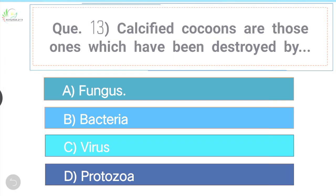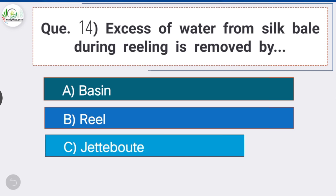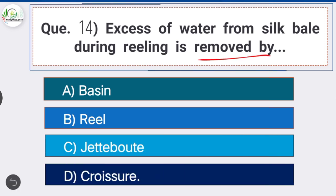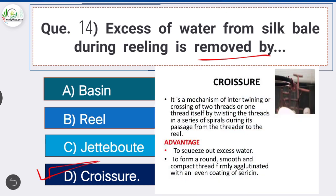Question number fourteen: excess water from the silk basin during reeling is removed by — option D is the correct answer — croiser. Croiser is a mechanism of intertwining or crossing of threads by twisting them in a series of spirals during passage from the threader to the reel. Its advantages are to squeeze out excess water and to form a round, smooth, compact thread firmly agglutinated with an even coating of sericin.